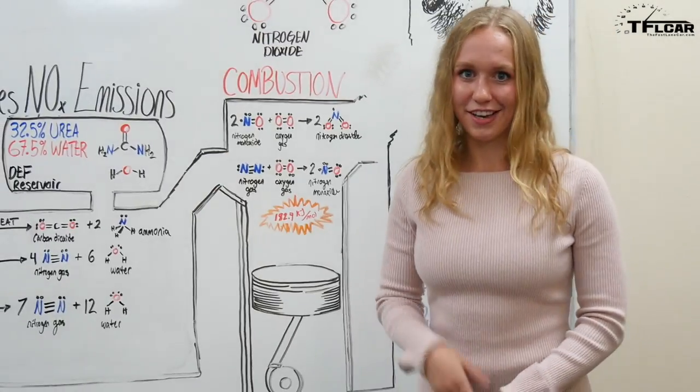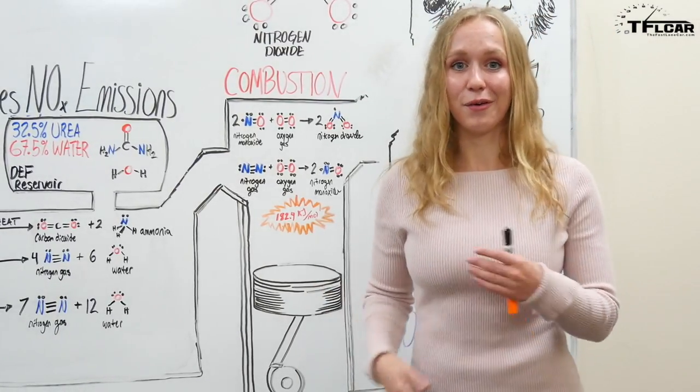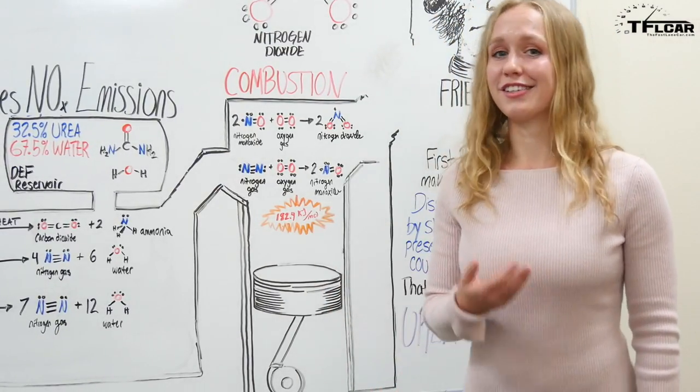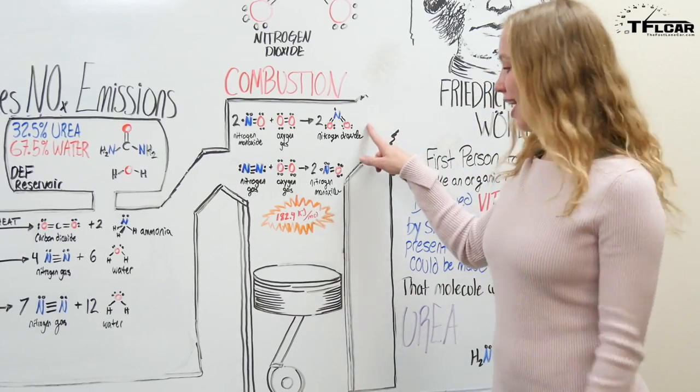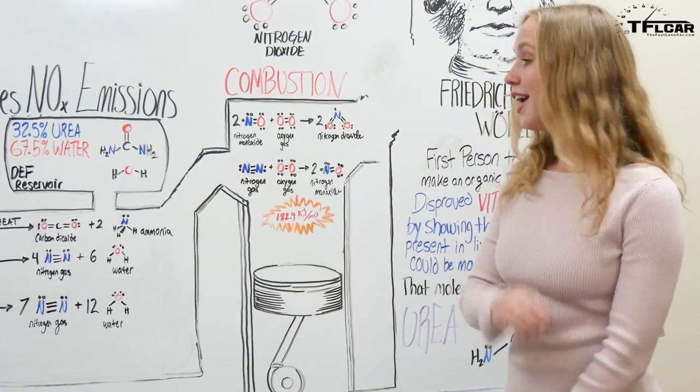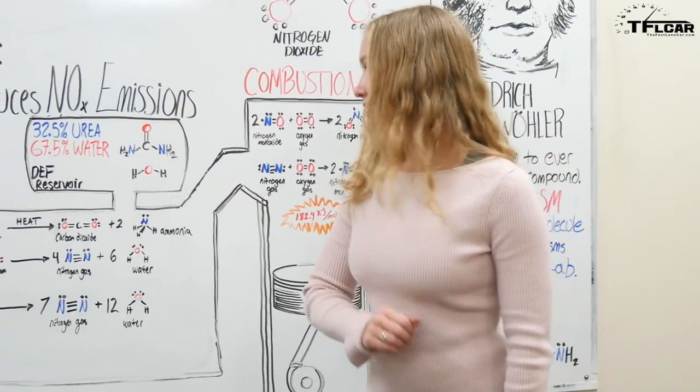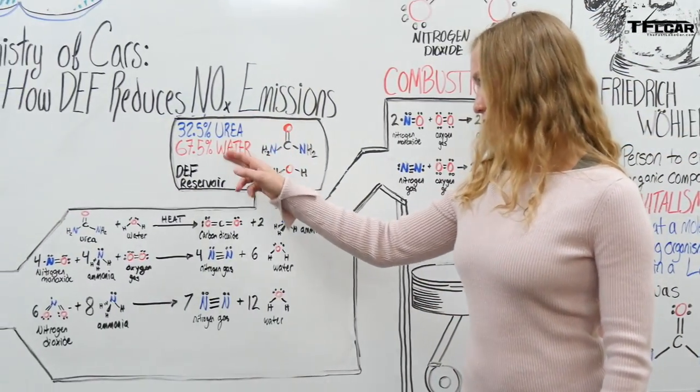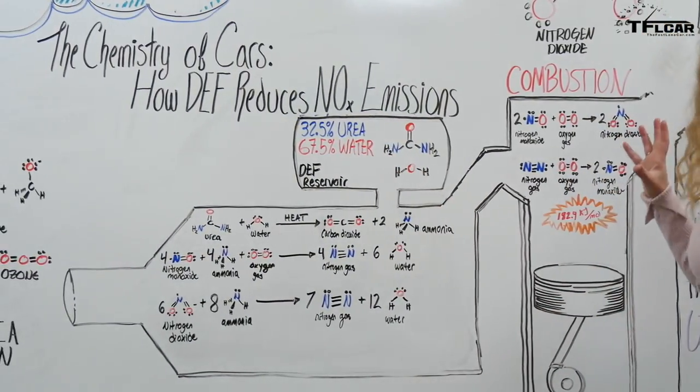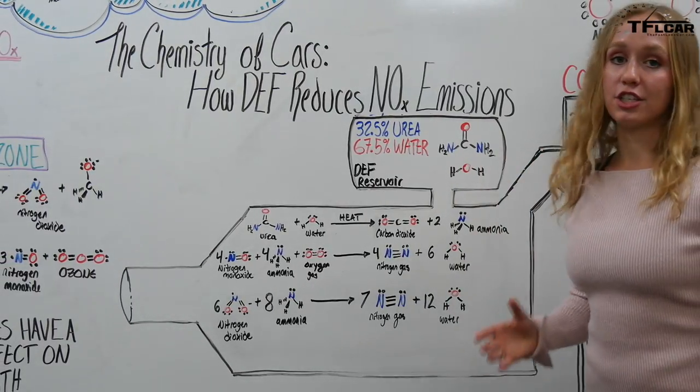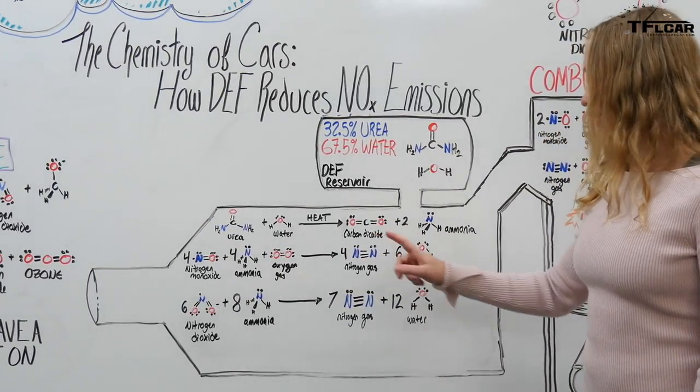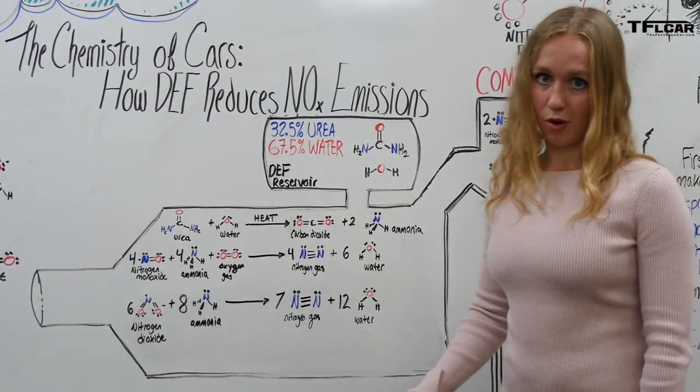With all the benefits of using a diesel engine in your car or your truck, one of the main detractors is, of course, the production of these harmful gases, nitrogen dioxide and nitrogen monoxide. That's where DEF steps in. It steps in with its urea and its water, and it transforms these harmful gases into much less dangerous compounds. We have carbon dioxide, nitrogen gas, and water.